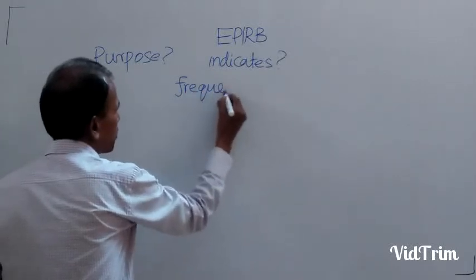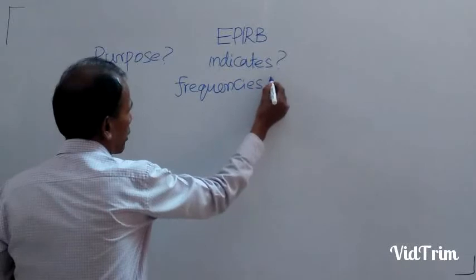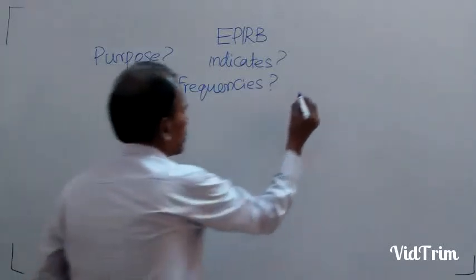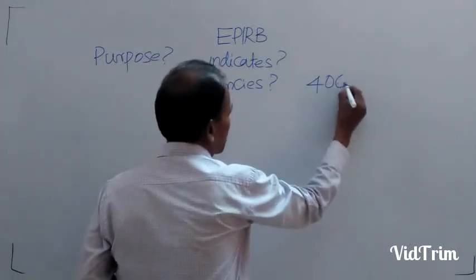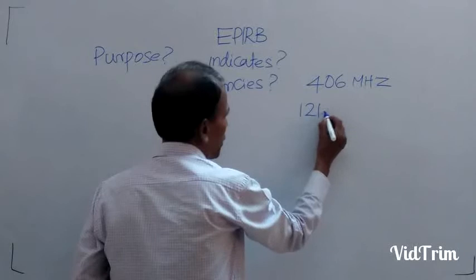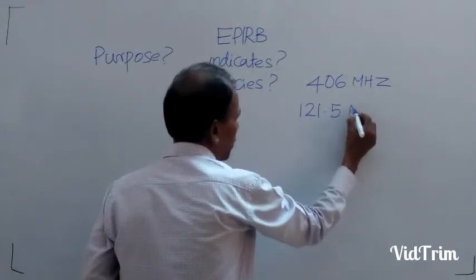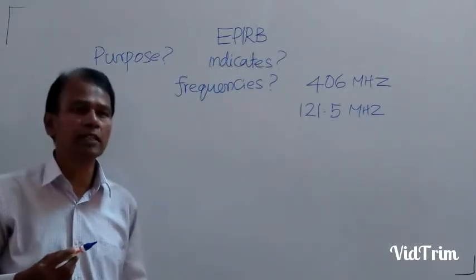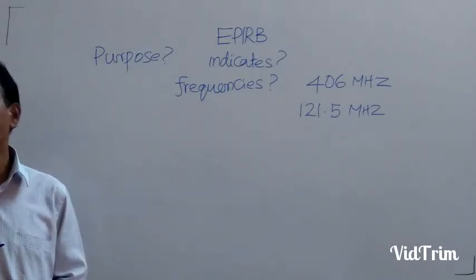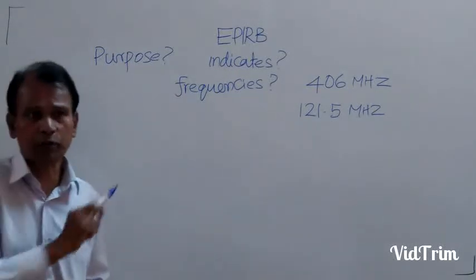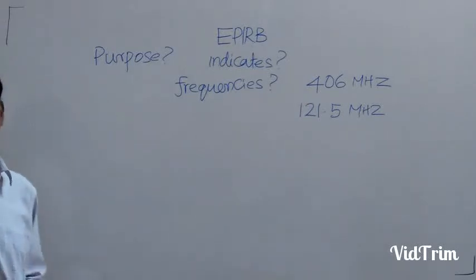Then the next thing you need to know: frequencies of EPIRB. Every equipment, you must know the frequencies. 406 megahertz and 121.5 megahertz. What is transmitted on 406 megahertz and what is transmitted on 121.5 megahertz will be discussed. Just know the frequencies. Every equipment, you must know what is the purpose and what are the frequencies. These are very important.